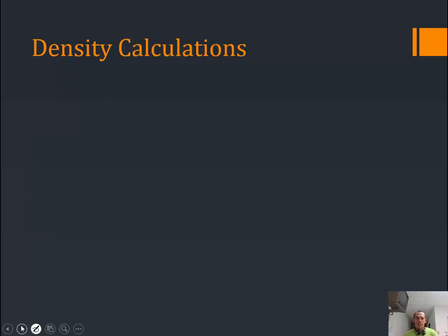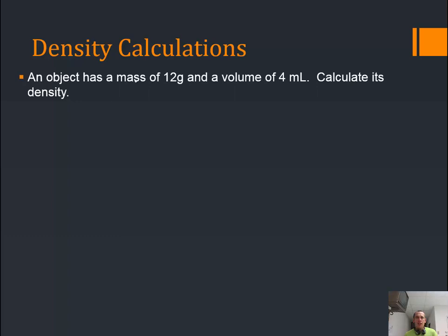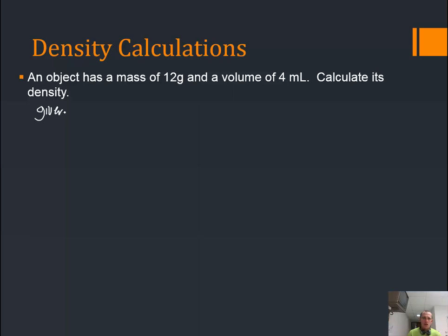Let's run through an example of calculating density. An object has a mass of 12 grams and a volume of 4 milliliters — calculate its density. Whenever we do math, you always have to list your variables, or given information. So: given — mass equals 12 grams, and volume equals 4 milliliters.